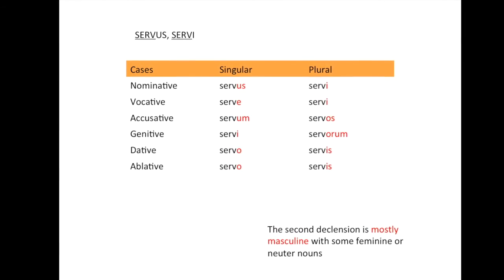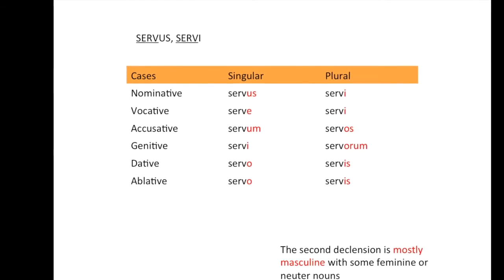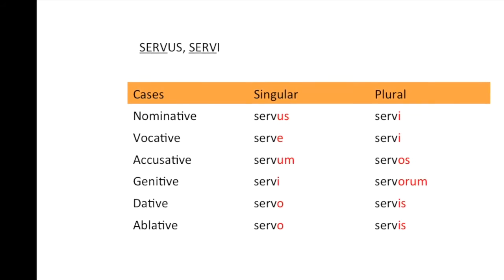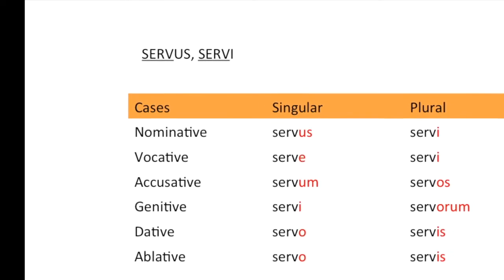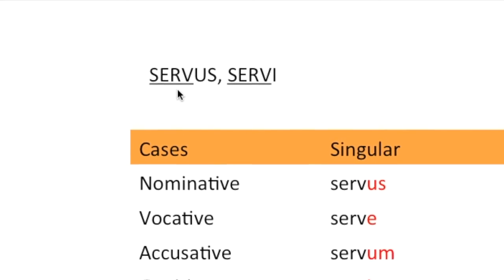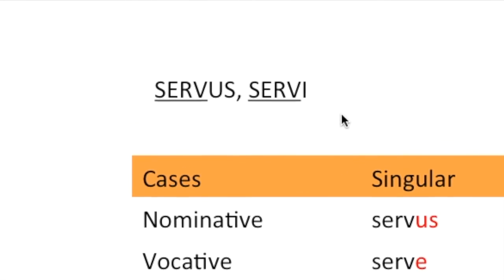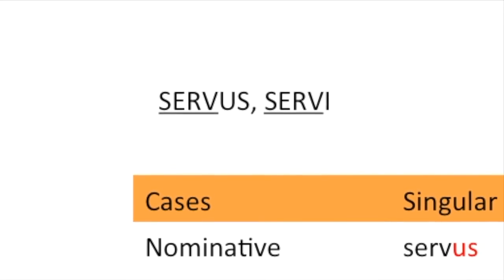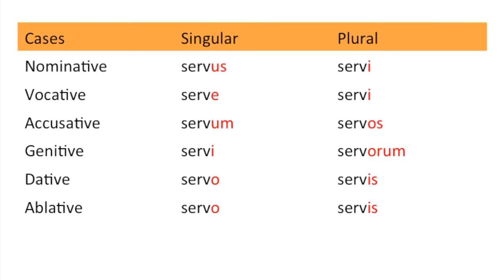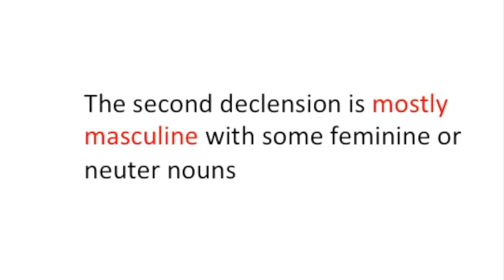Let's take a look at the second declension — the second family of nouns. To find the stem, you take 'servus, servi' as an example noun meaning 'slave.' You take the 'us' off of that, or the 'i' off of that, and then add the endings which are in red. The second declension in terms of gender is mostly masculine, with some feminine or neuter nouns.